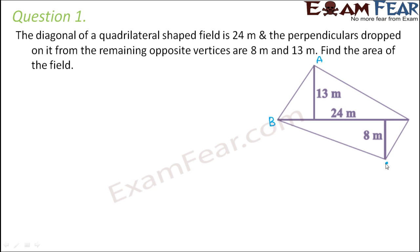So if you look at this, let us name this quadrilateral A, B, C, D. So in this case you see the length of the diagonal is given and the length of the perpendiculars dropped on the diagonals are also given.